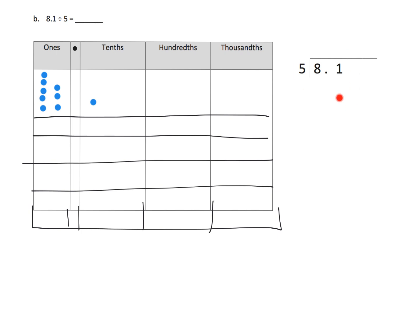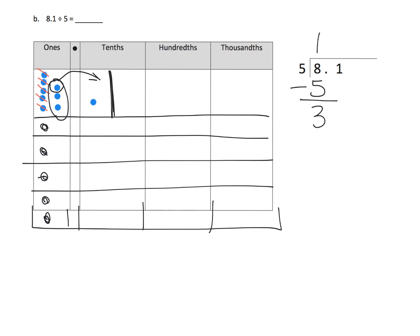We have eight ones and need to divide them into five groups, so each group gets one dot. That uses up five, leaving three ones left over. Those three ones can be exchanged for tenths — taking each and giving ten each — so there's 10, 20, 30. Imagine each as a strip of 10 dots, so now we have 31 tenths.